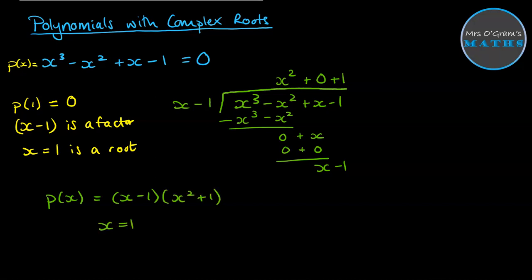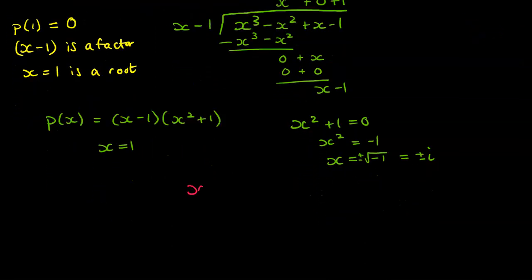But now we can express p(x) as being x minus 1 multiplied by x squared plus 1. So we get that x equals 1 is a root. We can get the other root by doing x squared plus 1 equals 0. So x squared is minus 1. So x is the square root of negative 1, which gives us plus or minus i. So our three roots we can then state as being x is 1, i, and minus i.